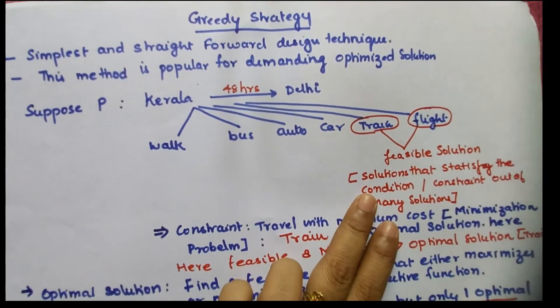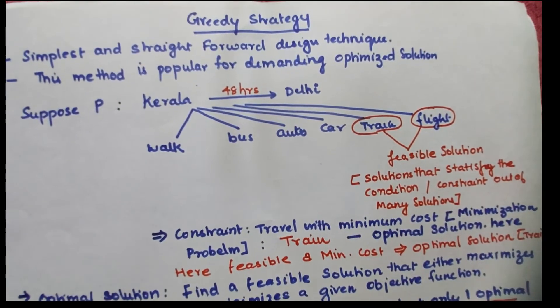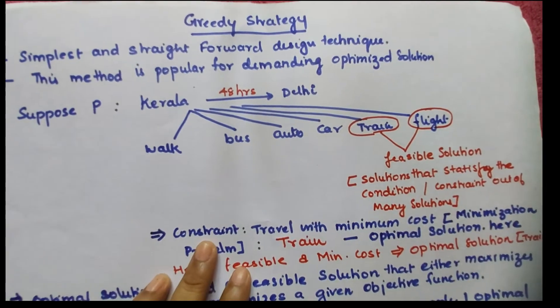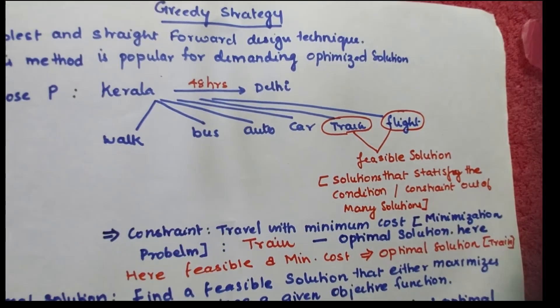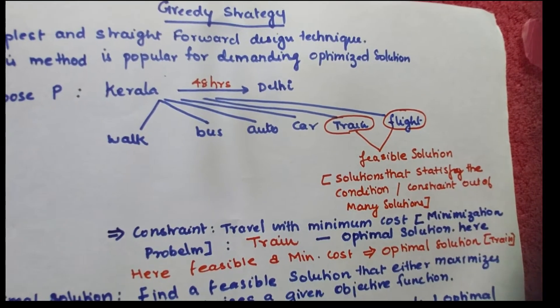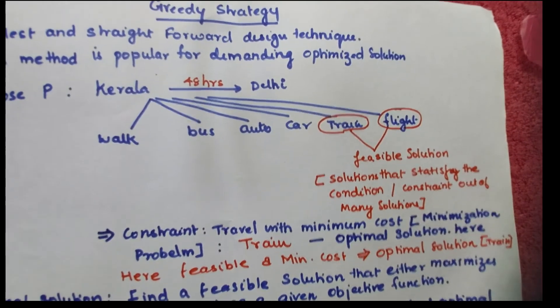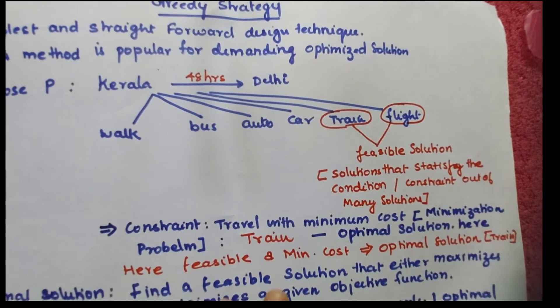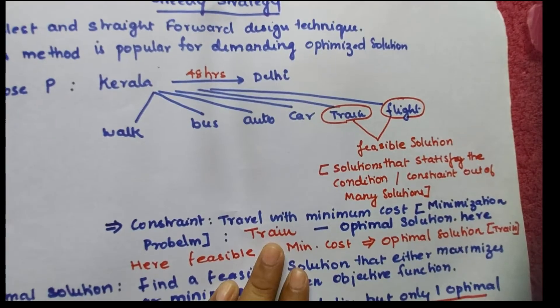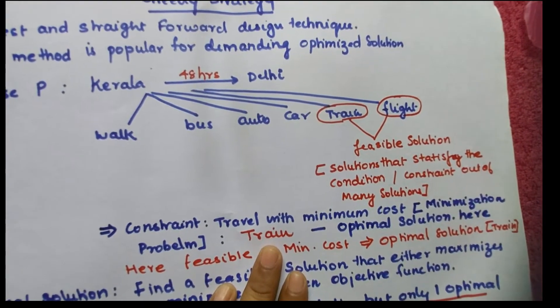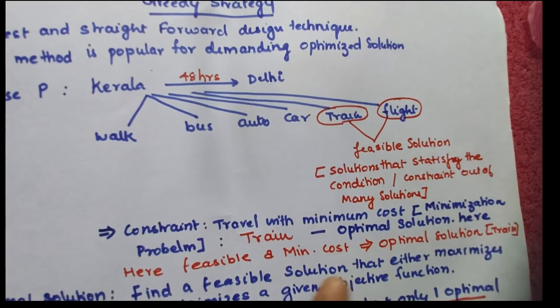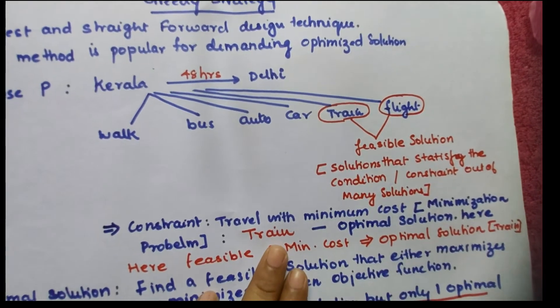From this solution, one more constraint I am going to add is that the traveling cost should be minimum. If you take the minimum cost, it can be called a minimization problem. Minimum cost means you have to travel by train. So the optimal solution is traveling by train.